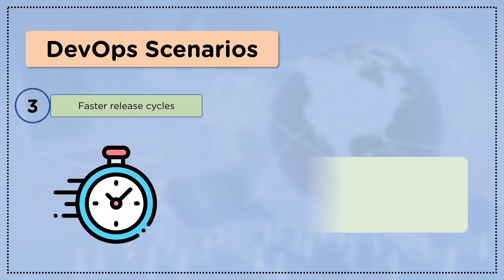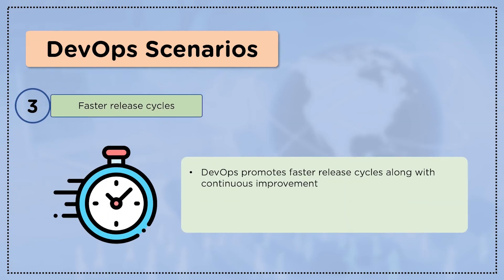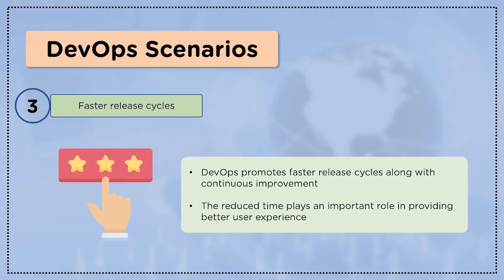The next real-time scenario is faster release cycles. DevOps drives development teams in the direction of continuous improvement and faster release cycles. This process in turn provides more time to focus on factors that really matter. The reduced time plays an important role in providing better user experience.